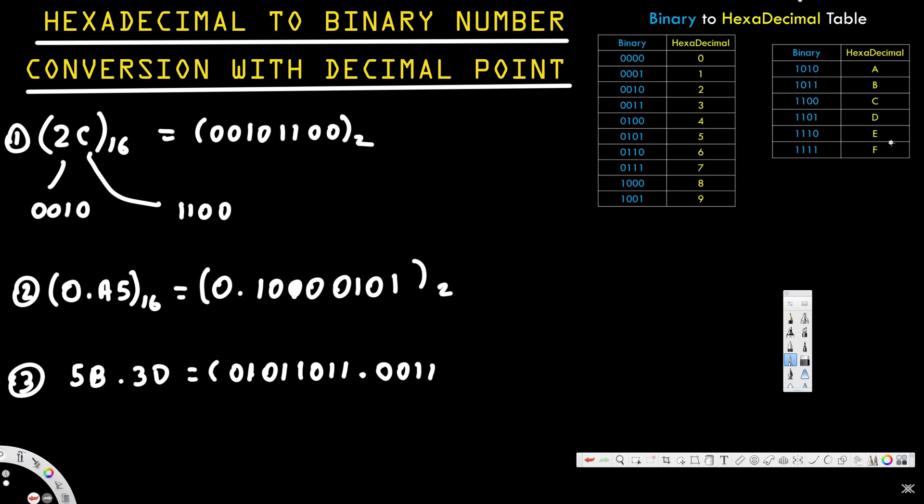For D, we have 1101. So the complete conversion is 0101 1011.0011 1101 in base 2. And that's how we do the conversion from hexadecimal to binary. I hope this helps, thanks for watching.